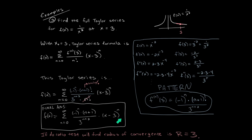If you do the ratio test to find the radius of convergence of this Taylor series, you'll find that the radius is 3. So the interval of convergence for the Taylor series is from 0 to 6.